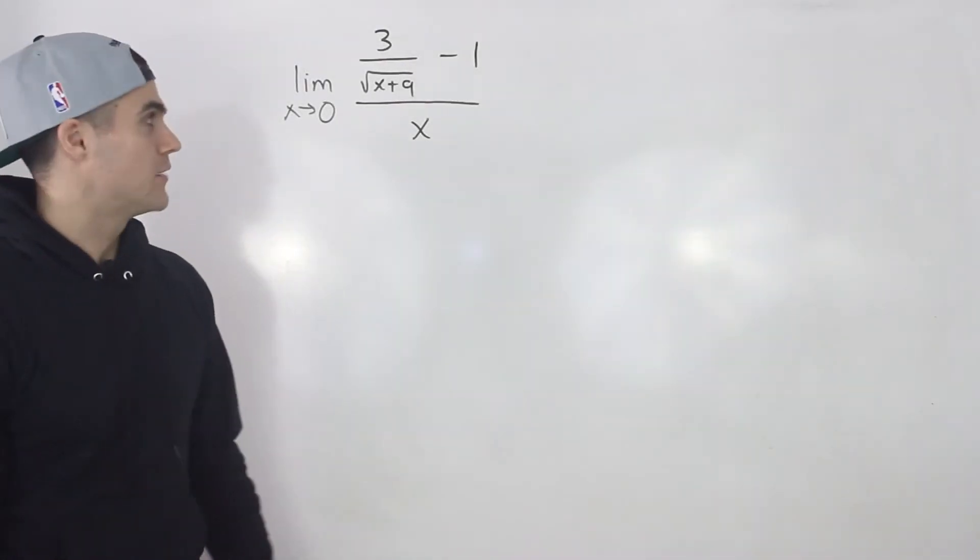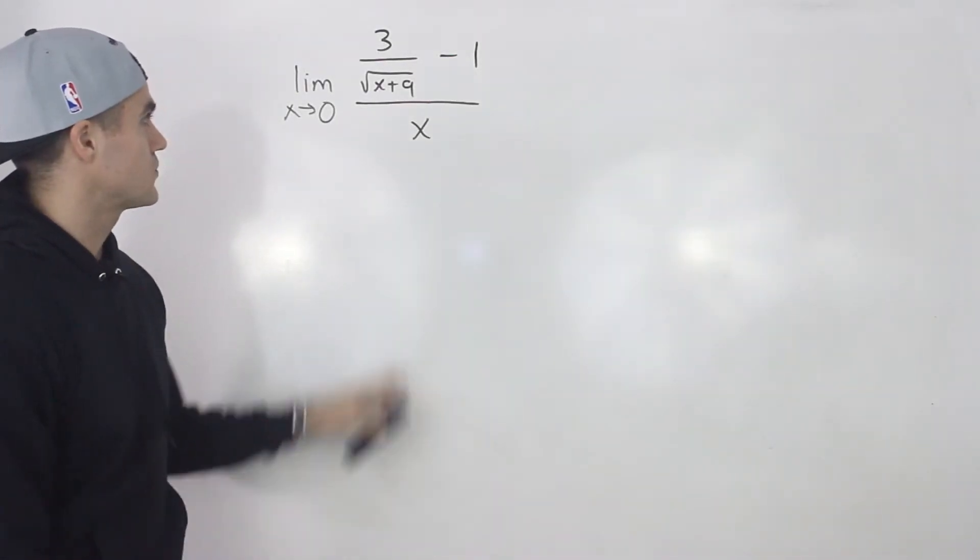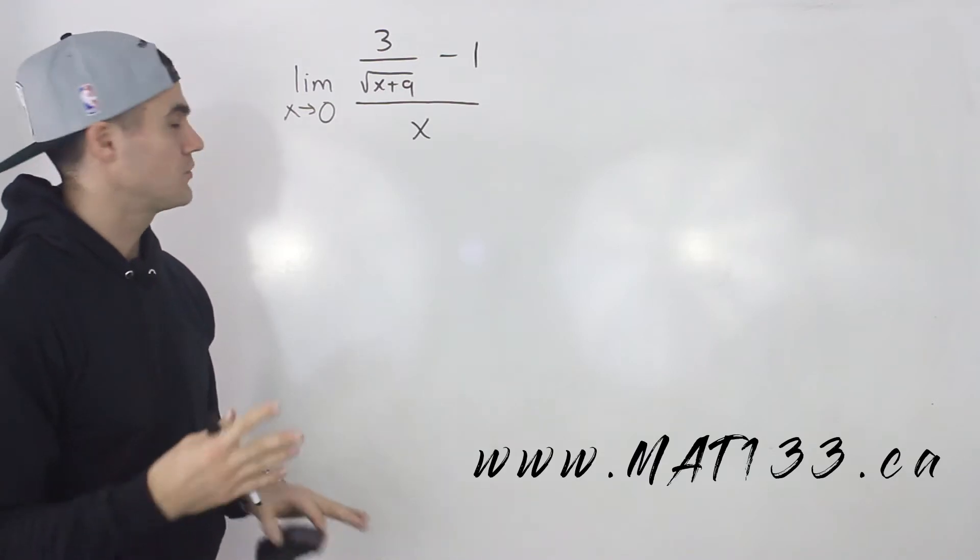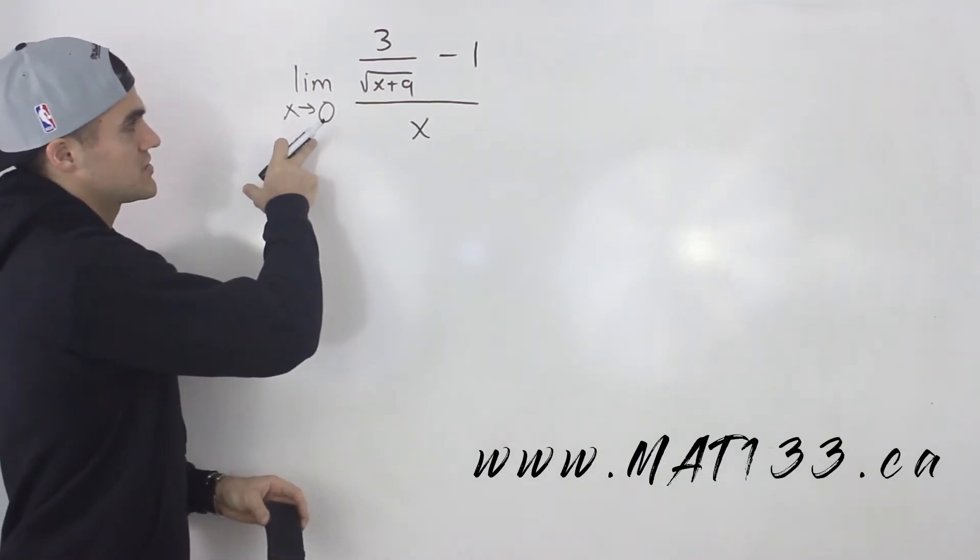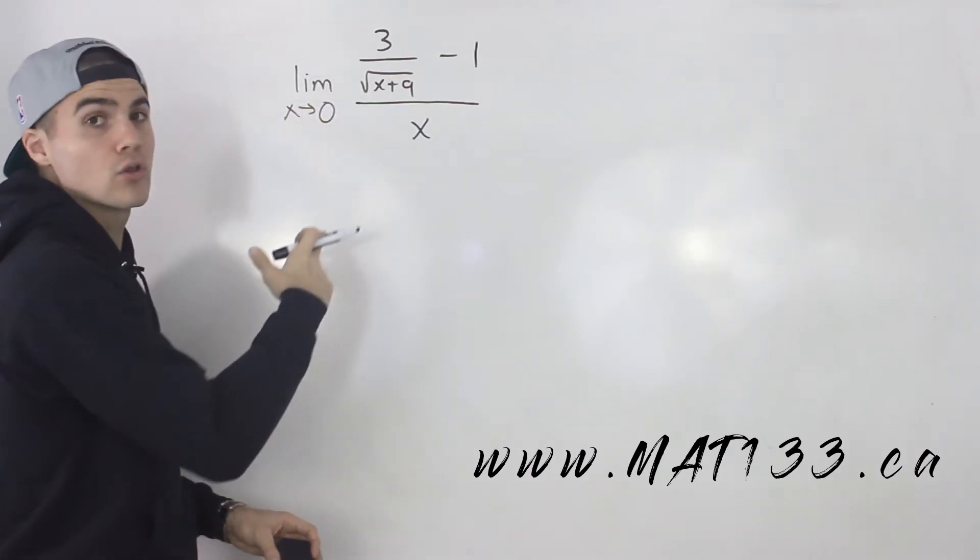Hey, welcome back everybody. Patrick here and moving on to another question. We have a limit. This one's pretty tricky. We haven't seen one like this before. So we've got the limit as x approaches 0 of 3 over the square root of x plus 9 minus 1 all over x.